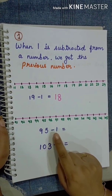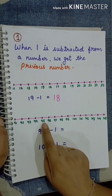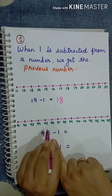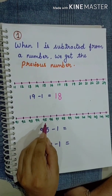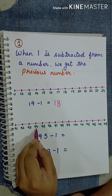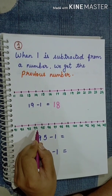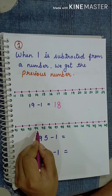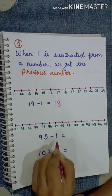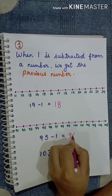95 minus 1. So where is 95? Here is 95. We have to subtract number 1 from 95. If we subtract 1 from 95, we will get 94. So 94 is also the previous number of 95. When we subtract number 1 from 95, we get 94.